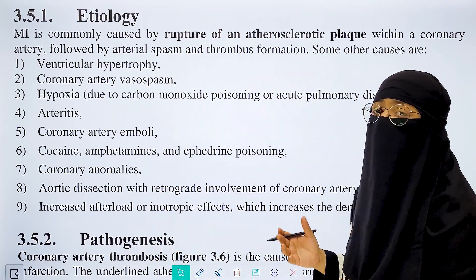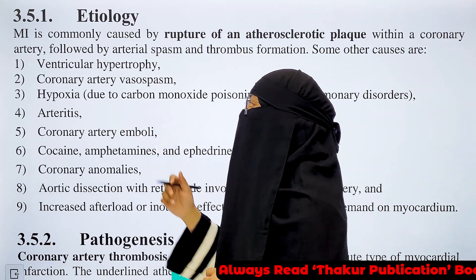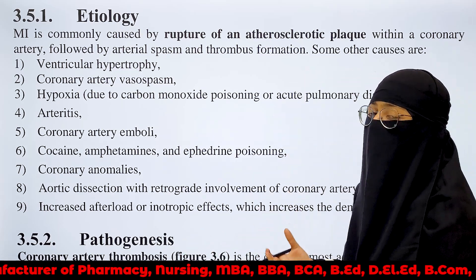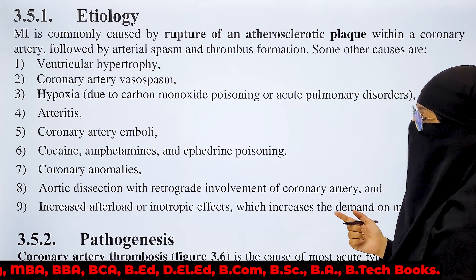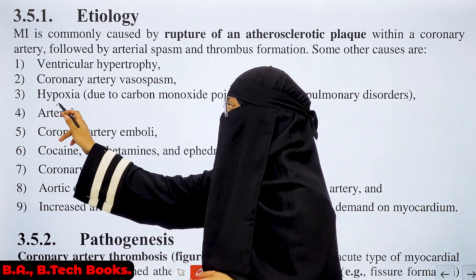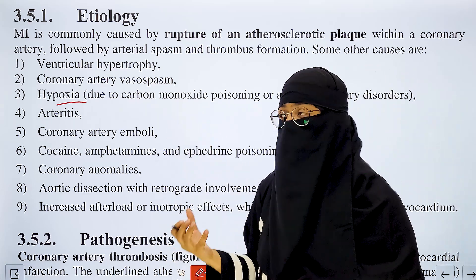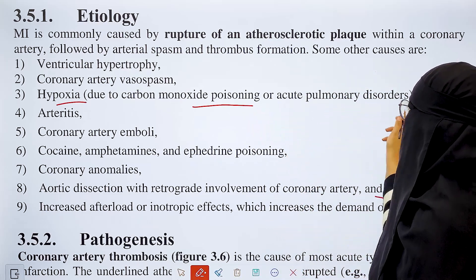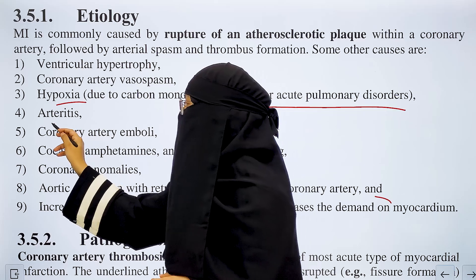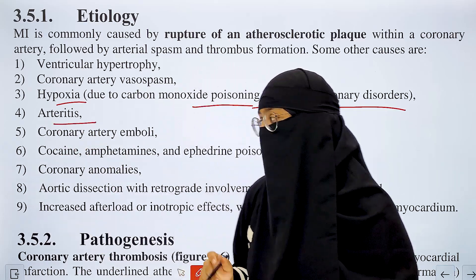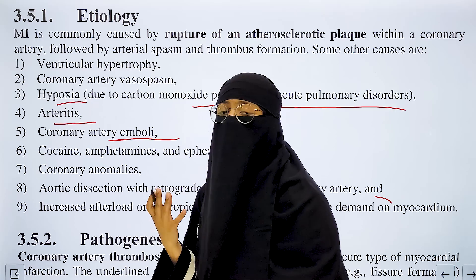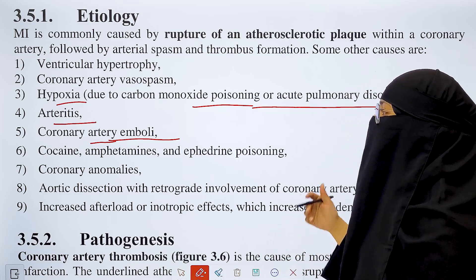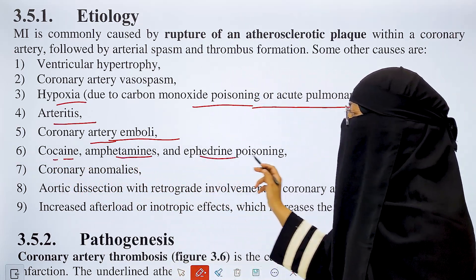Other causes include ventricular hypertrophy, where the size of the ventricle is abnormally increased, and coronary artery spasms causing muscle tightness. Hypoxia from decreased oxygen levels, carbon monoxide poisoning, and acute pulmonary disorders are also causes. Additional causes include arteritis — inflammation of the arteries — coronary artery emboli causing blockage, and poisoning from cocaine, amphetamine, and ephedrine.